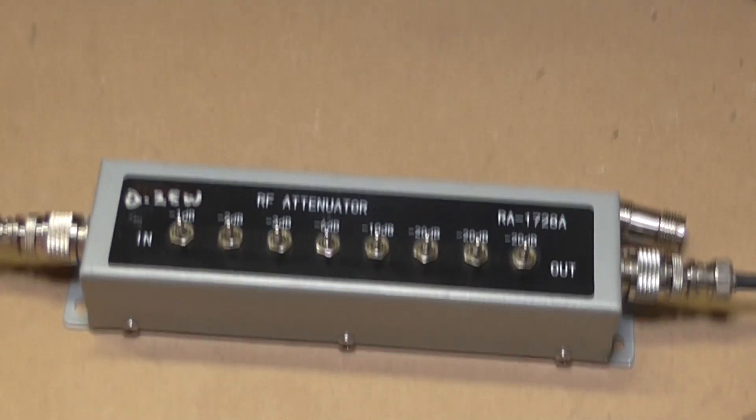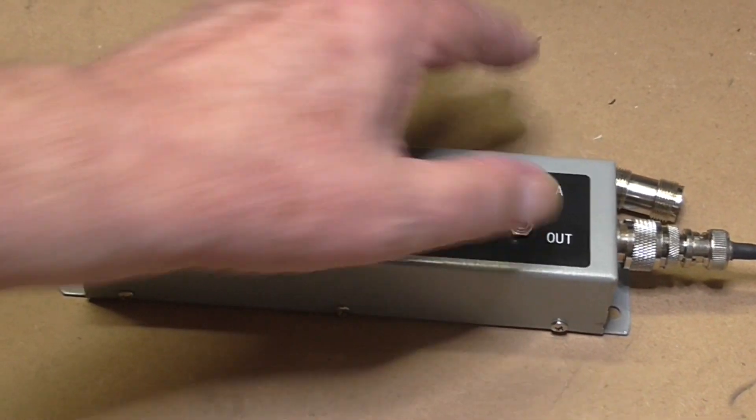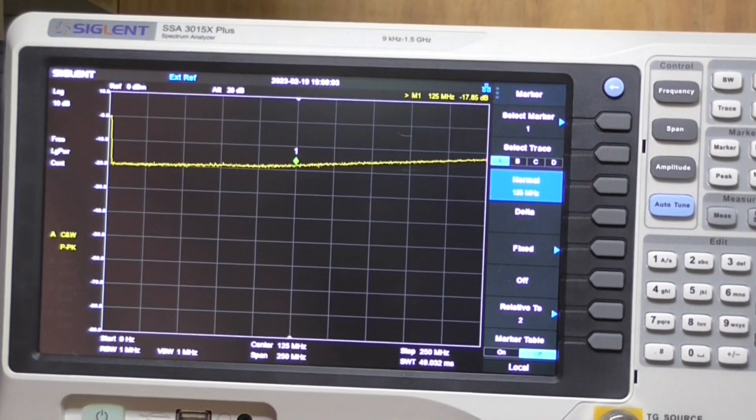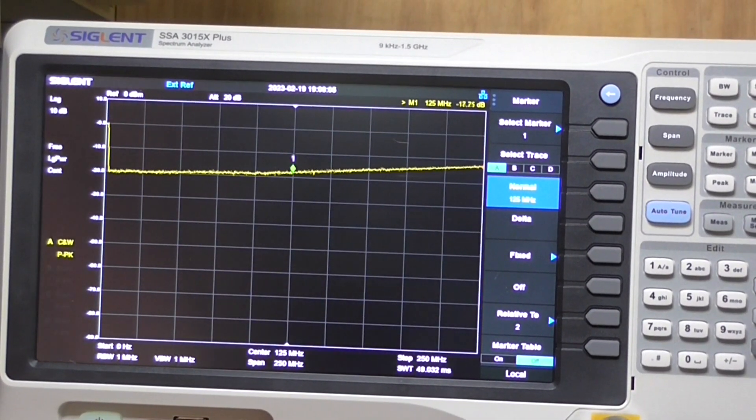Now I'm going to switch in the 20 dB stage of the circuit. That's what we're seeing—a bit of a slope. At the 125 meg mark it's minus 17 dB.